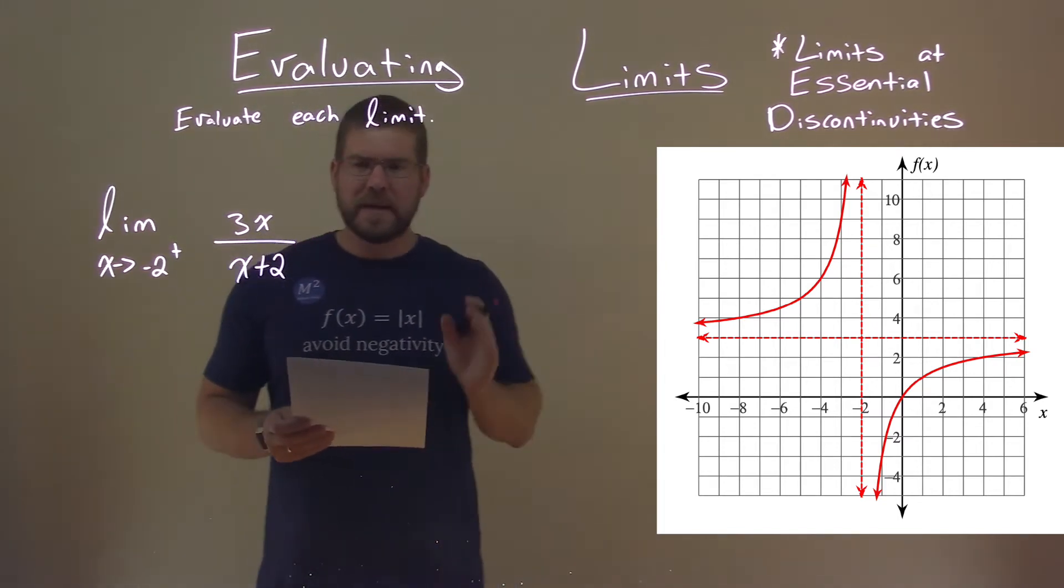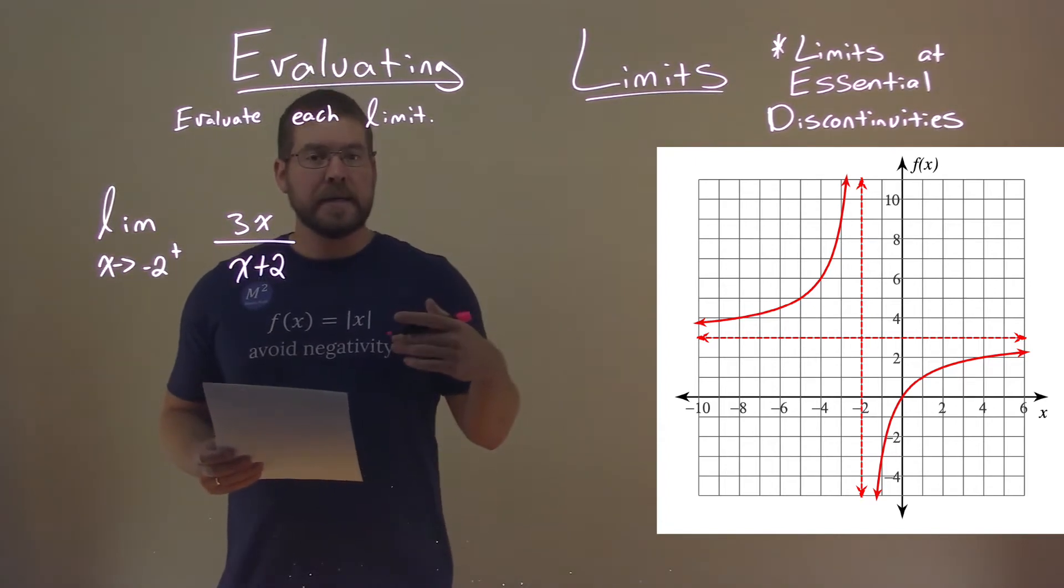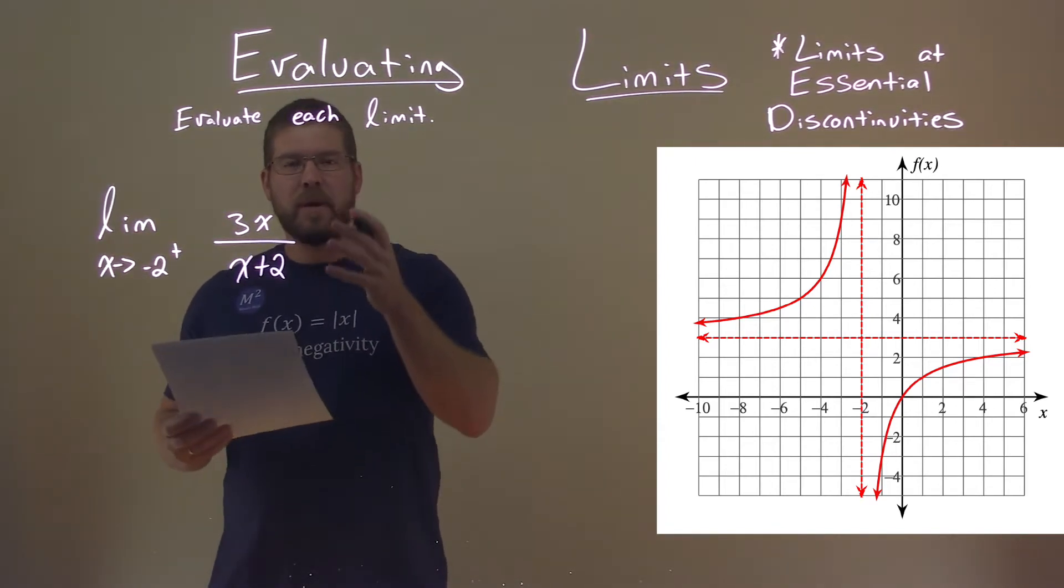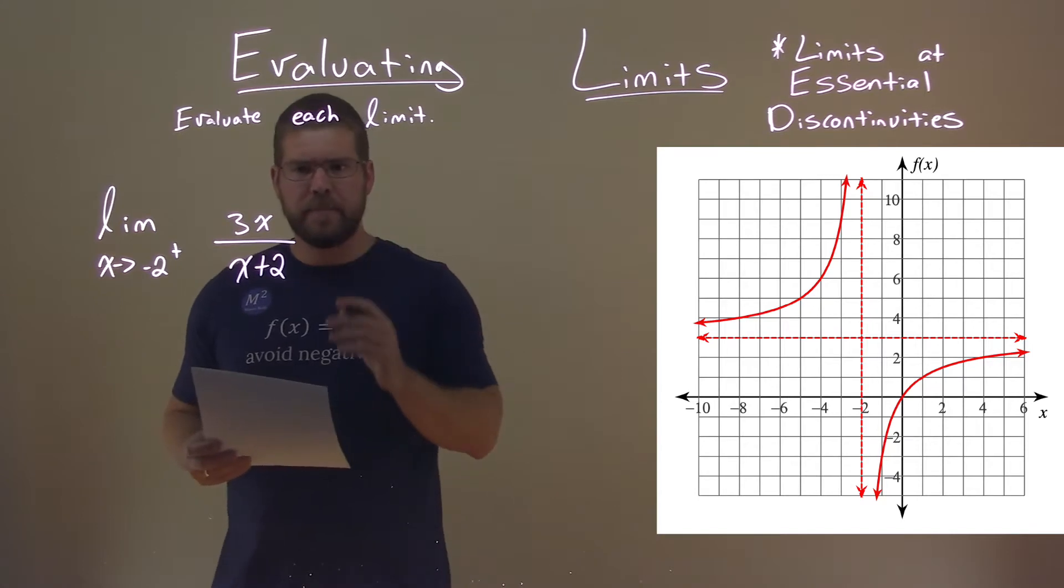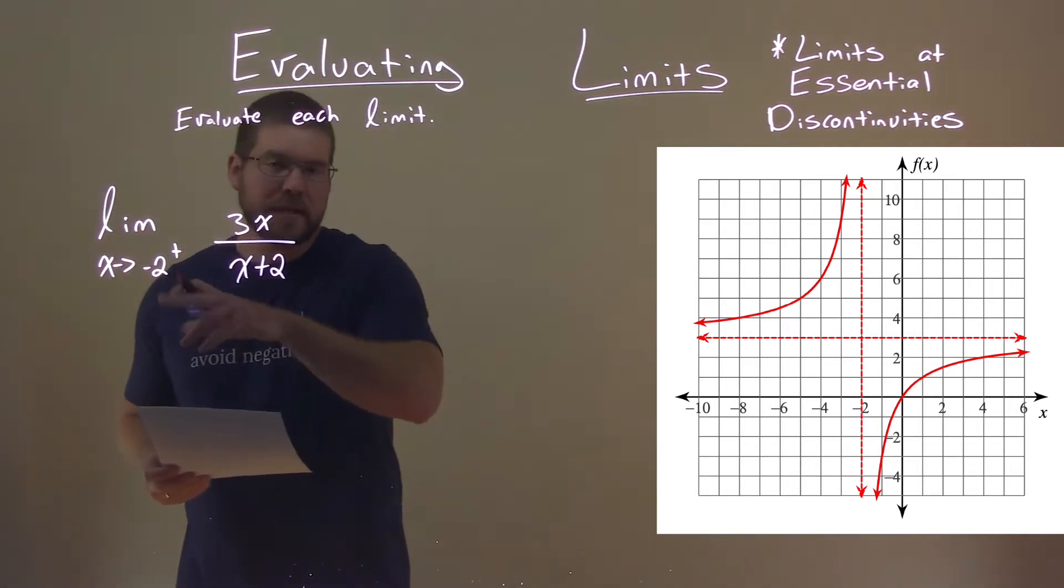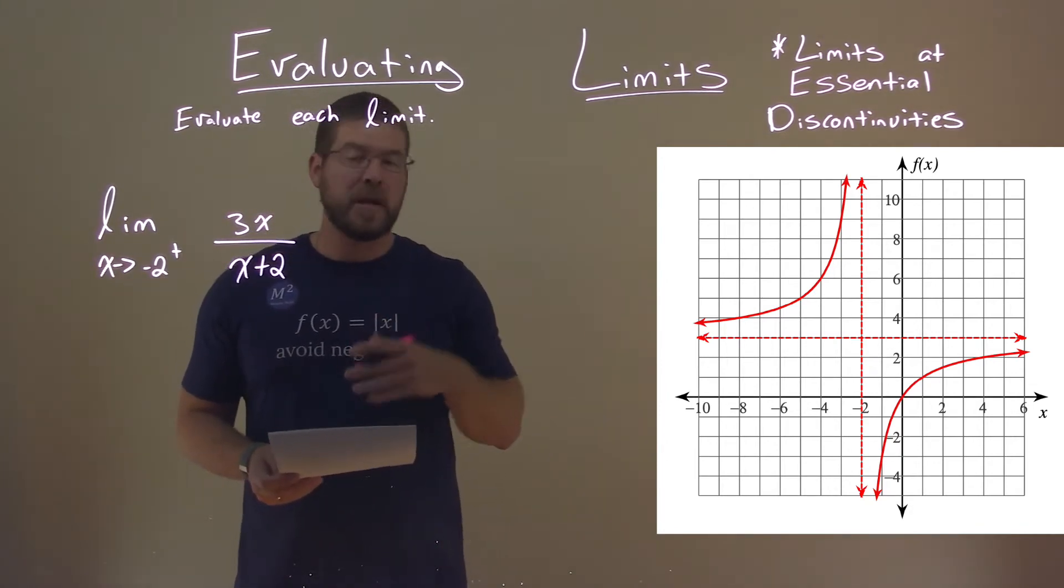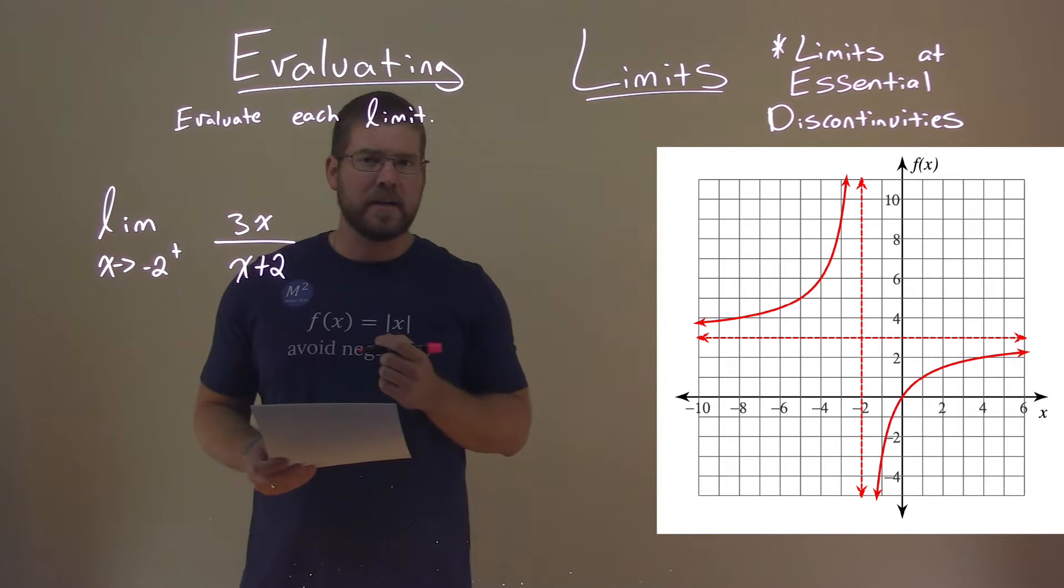So what I like to do is try to see what happens as we approach negative 2 from the right, and we really want to see is this going to be positive or negative. Since we're dividing by a 0, or approaching a 0, we know it's going to go to some infinity, either negative or positive, and that's what we're trying to figure out here.